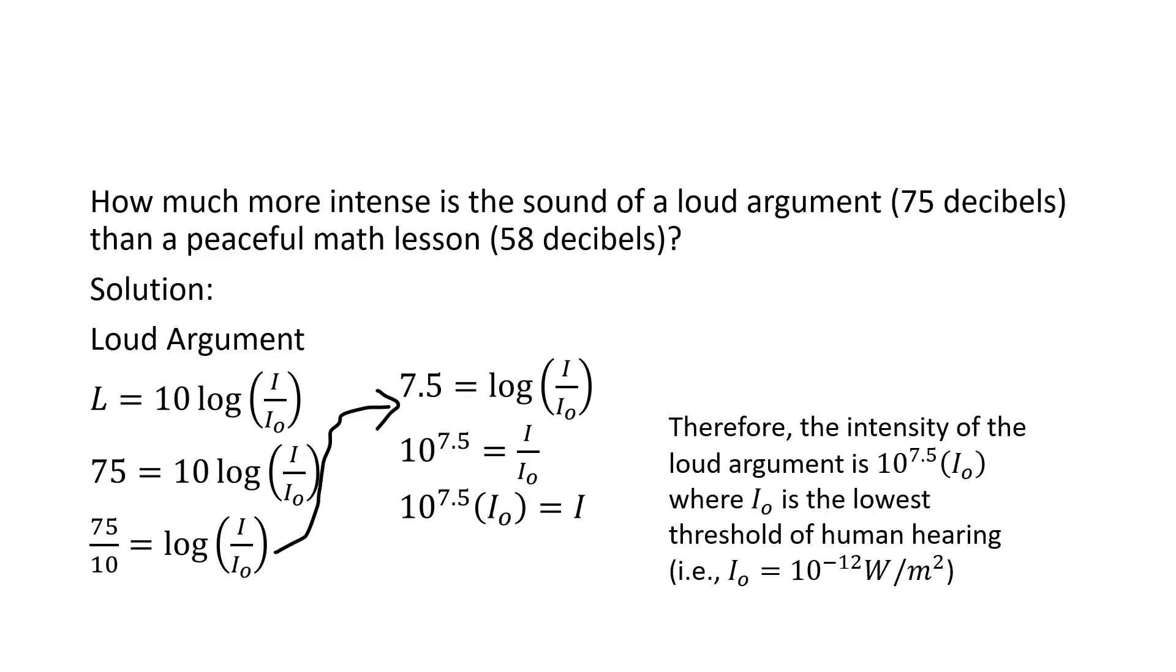well, what we can do is say that the first intensity can be determined this way. 75 equals 10 log I over I naught. Well, we can divide both sides by 10, and so we get 75 over 10 equals log I over I naught. Now, 75 over 10 is obviously equal to 7.5.